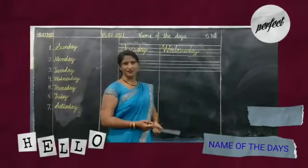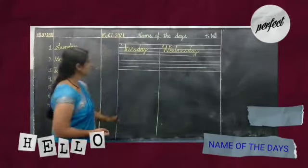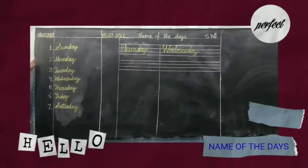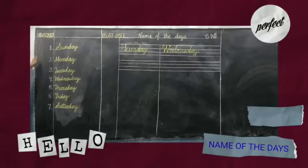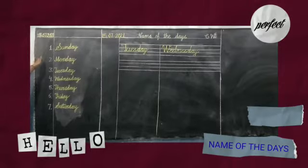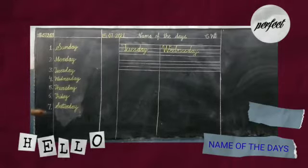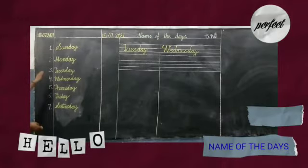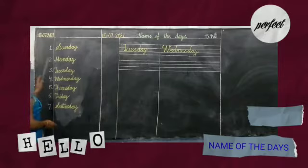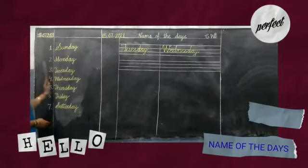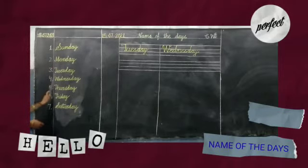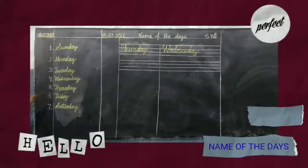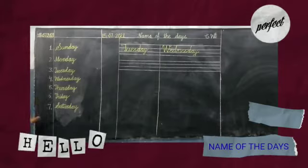First of all we will read the names of the days. You can see here. Now we will read the names of the days — you repeat after me loudly. Sunday, Monday, Tuesday, Wednesday, Thursday, Friday and Saturday.